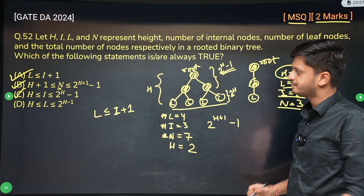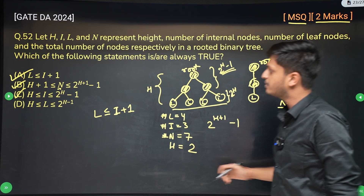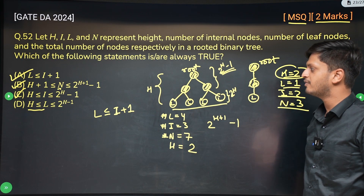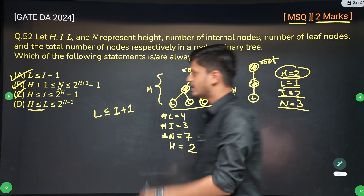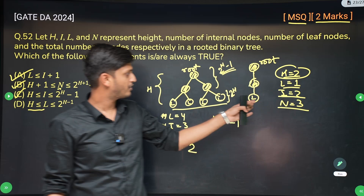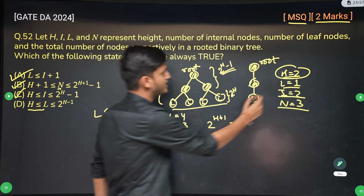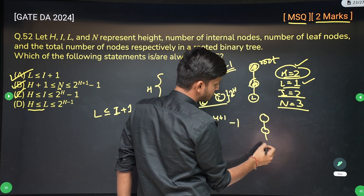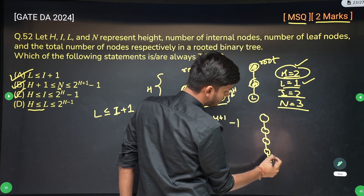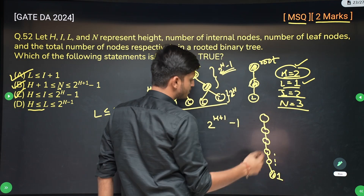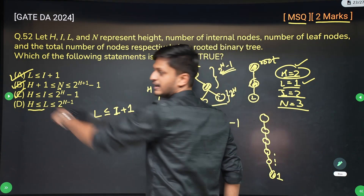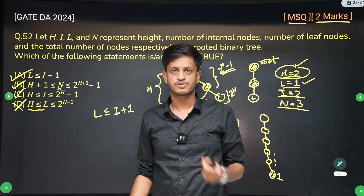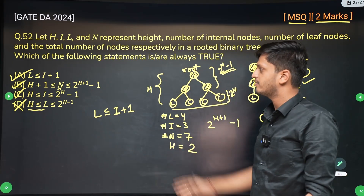Option D says the number of leaf nodes will be at least h, which is not correct. The number of leaf nodes can be 1 even when the height is very large — for example, height 100 with only 1 leaf node in a chain. So this statement is not right. Options A, B, and C are correct.